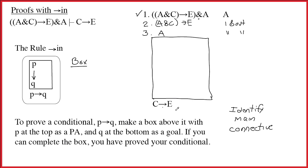Now, what are we trying to prove? Are we trying to prove that C is true and that E is true? No, we're trying to prove that C leads to E. If C was the case, then E would be the case. And so what we're going to do in this box is put C at the top and E at the bottom.